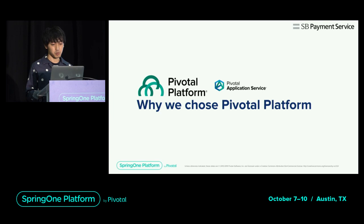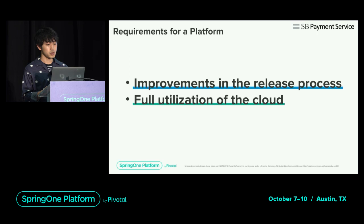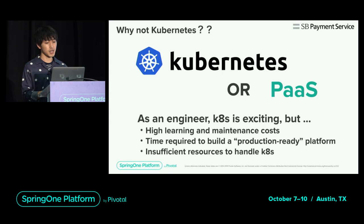There were two major requirements for the platform: firstly, improvements in the release process; secondly, we wanted to achieve full utilization of the cloud. Kubernetes is very popular and I'm personally interested as an engineer. However, the learning cost and maintenance costs are high, and it takes substantial effort to build out a platform more than our small team would be able to deliver in a timely manner. We didn't want that to become the bottleneck.